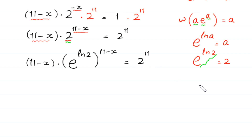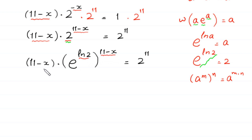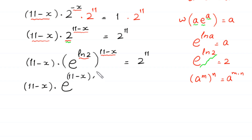Next, according to this property of exponents — a to the power m, whole to the power n, is equal to a to the power m times n — we multiply this power ln of 2 by this power 11 minus x. So this expression becomes: 11 minus x times e to the power ln of 2 times 11 minus x, which is 11 minus x times ln of 2, equal to 2 to the power 11.